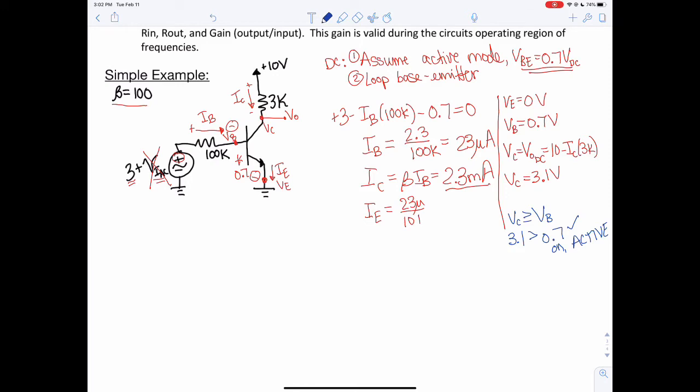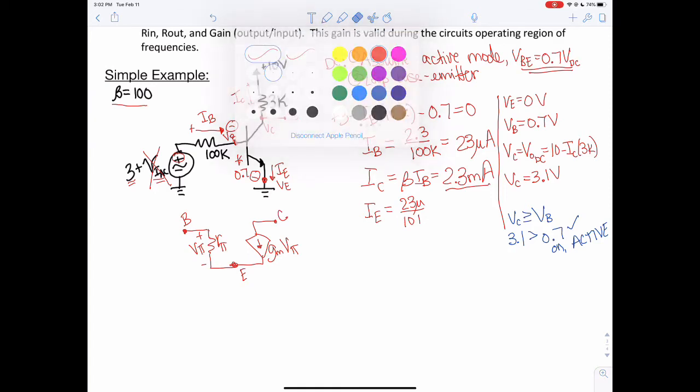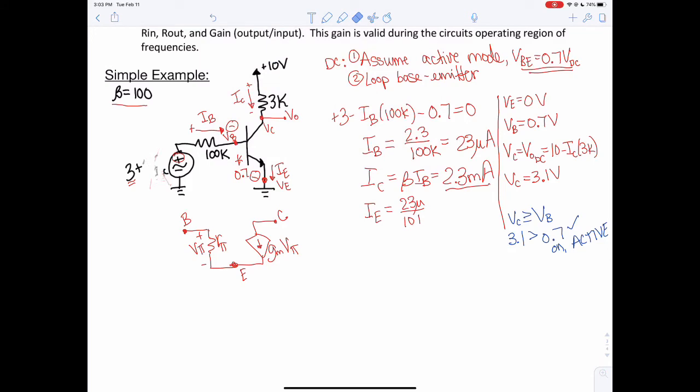Now for AC, I suggest for students just starting to draw this is to start with the hybrid pi itself. Draw our pi resistor and the current source. And then after you've drawn that, figure out what is connected at each location. Remember, this is the base, this location is your emitter, and this location is your collector.